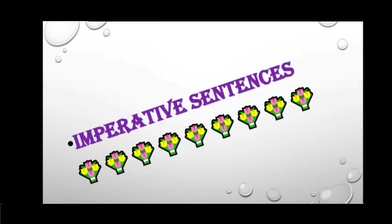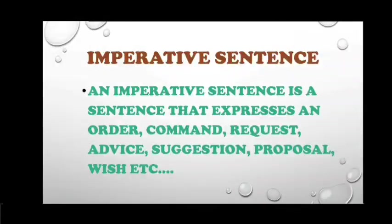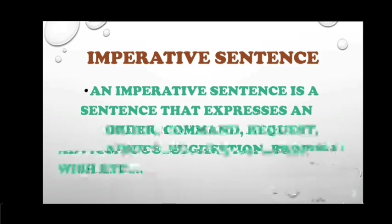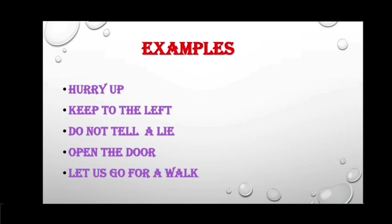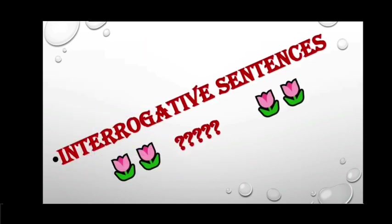Next, imperative sentences. An imperative sentence is a sentence that expresses an order, command, request, advice, suggestion, proposal, or wish — it tells someone to do something. The word order is: verb plus object, and no subject is found. It ends with a full stop. Let us see some examples: hurry up, keep to the left, do not tell a lie, open the door, let us go for a walk.